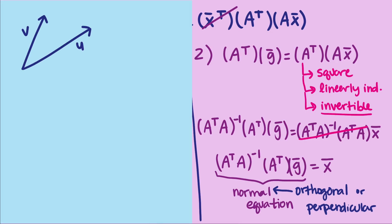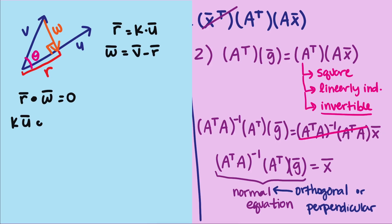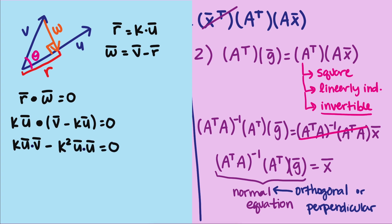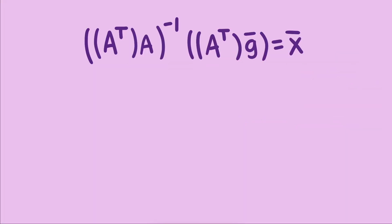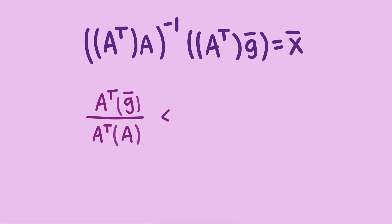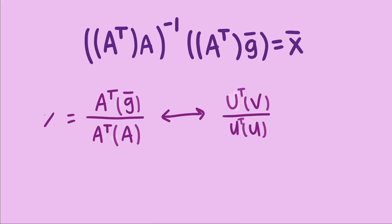The process we went through was pretty close to the simpler case of projecting one vector onto another, which we did in another video. When we solved that problem, we did not have to know matrix algebra — we just needed vector algebra. But both formulas look very similar. If we rewrite the multiplication of A-transpose A as a division and rewrite U dot U as a matrix product, we can see the similarities between the two formulas, which hints that A-transpose A is a generalization of a dot product to matrices.